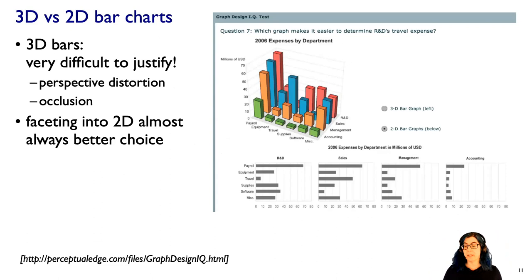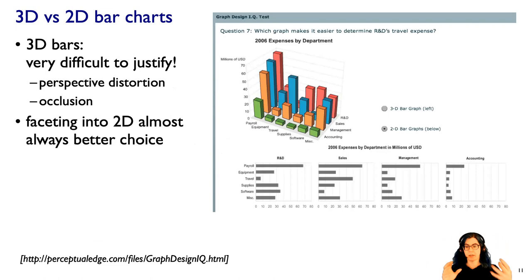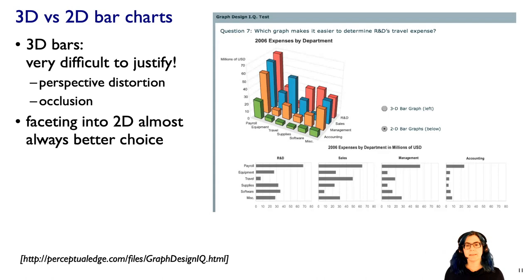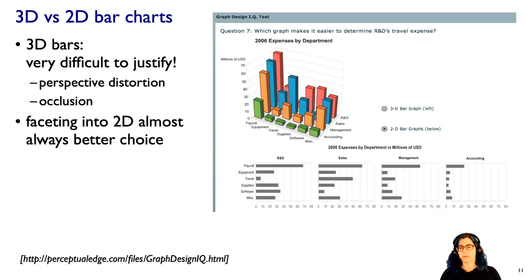Although I hardly ever say never, it's pretty rare that a 3D bar chart is a good idea. Here's a great example from Stephen Few: we see a bar chart with perspective distortion making it hard to compare the heights of the red bars in back, plus occlusion hiding a red bar behind the blue bars. It's almost always better — I might even say always better — to facet into 2D. With multiple 2D views you can use high-accuracy spatial perception to see subtle distinctions between bar lengths that are easy in 2D but very hard in 3D.